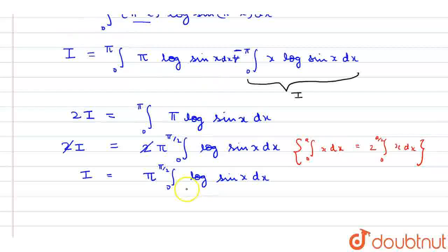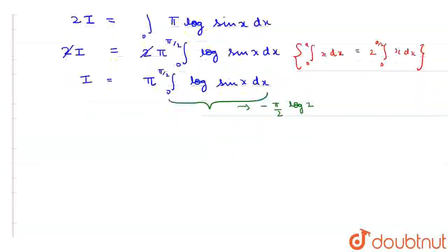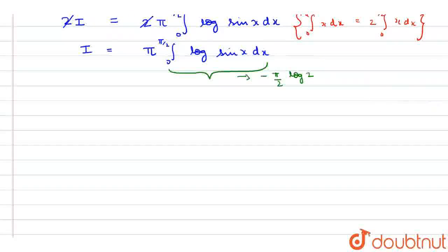This integral has a direct value which equals minus pi by 2 log 2. So this will be I equals pi times minus pi by 2 log 2.